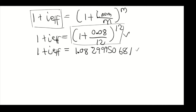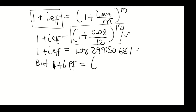To find the half-yearly rate, we set up: 1 + i_eff = (1 + i_half/m)^m. Since half-yearly means m equals 2, we write: (1 + i_half/2)^2 = 1.0829995068.